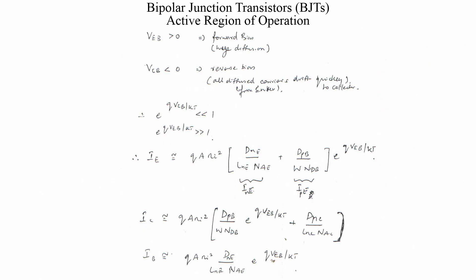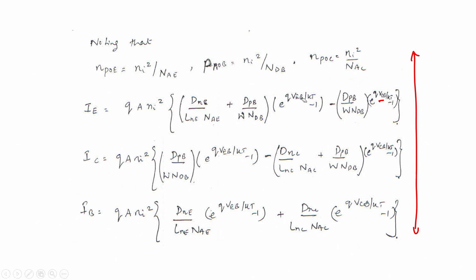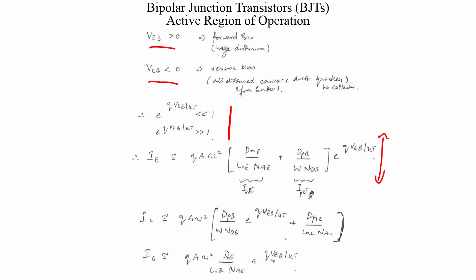Active mode is something we are particularly interested in because we will later use this for doing circuits. We say that VEB is greater than 0 and VCB is less than 0. Since the exponential of qVEB/kT is much greater than 1, we ignore the minus-one term. The emitter current and collector current are therefore most strongly controlled by the emitter-base voltage in active mode.